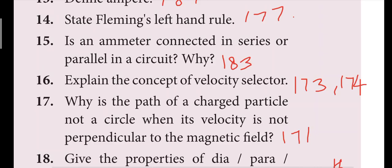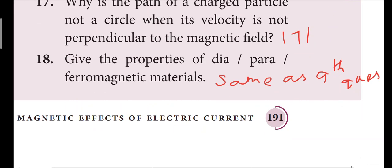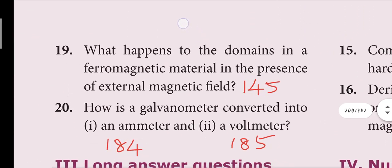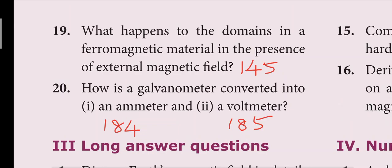Sixteenth question: explain the concept of velocity selector — pages 173 and 174. Seventeenth question: why is the path of a charged particle not a circle when its velocity is not perpendicular to the magnetic field — 171. Eighteenth question: give the properties of dia, para, and ferromagnetic materials.